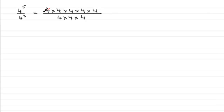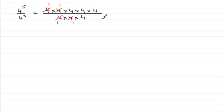I can see that 4 will go into the 4 on top once, and into any of the 4s on the bottom once — we'll just pick the first one. Again I can divide top and bottom by 4, so I can take out that 4: 4 into 4 goes once, and 4 into 4 goes once. And it doesn't stop there — I can cancel by 4 again. It doesn't matter which one of these 4s I pick. 4 into 4 goes once, 4 into 4 goes once.